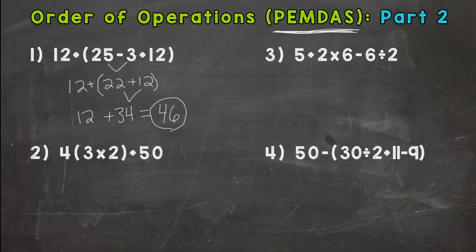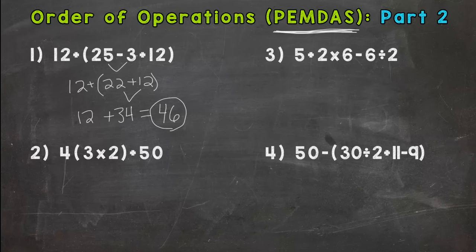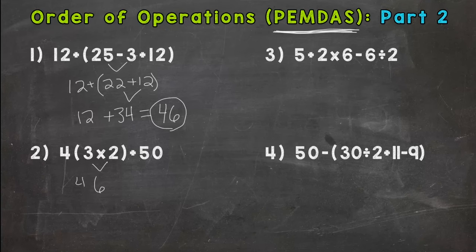Circle your final answer — 46, good to go. Number two: we have a 4 right next to the parentheses, with 3 times 2 inside the parentheses and then plus 50. Any parentheses? Yes, so we start there: 3 times 2 is 6. We used all the operations in the parentheses so they go away. Drop the 4 — whenever a number is right next to parentheses it means multiplication, you can even put an x there. Then drop our plus 50.